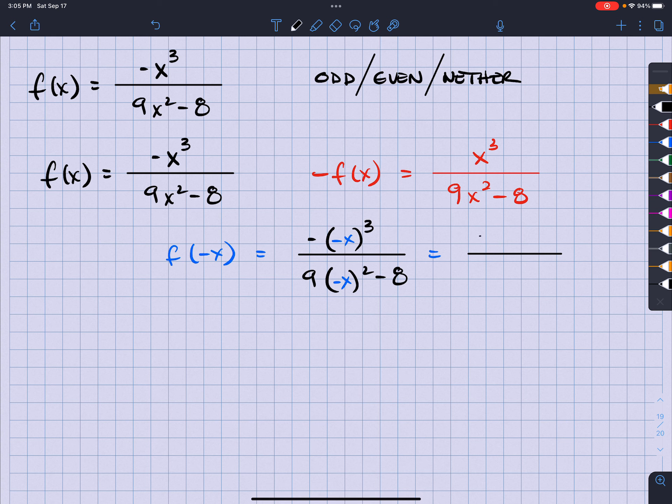So I have here negative, and my result of doing that is gonna be negative x to the third over, well, negative x squared is just gonna be x squared. So that is just gonna be 9x squared minus 8.